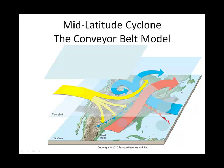We have three sectors of air. We can call this sector A over here — yellow — sector B here in red, and sector C over here in blue. You see your characteristic cold front and warm front that is part of an early mid-latitude cyclone.